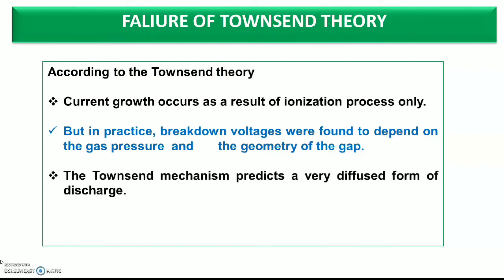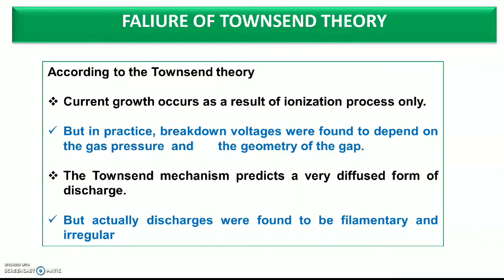According to Townsend's theory, the next limitation is that the Townsend's mechanism predicts a very diffused form of discharge. But in actuality, the discharge observed is filamentary or irregular. Townsend stated that whatever discharge occurs in the gaseous dielectric material, it will be diffused discharge. But practically, the discharge was filamentary and irregular. This means there were so many contradictions between Townsend's theory and the practical situation.